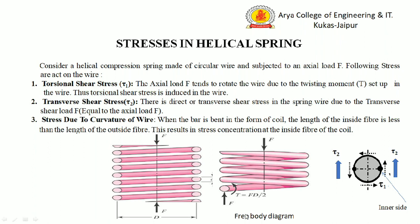To balance this torque or twisting moment, an anticlockwise moment is produced at this section, which is equal to the force F multiplied by the perpendicular distance from the center line to this section. This distance is D by 2. So twisting moment T is equal to FD by 2. This twisting moment T produces a torsional shear stress Tau 1, as shown in this diagram.